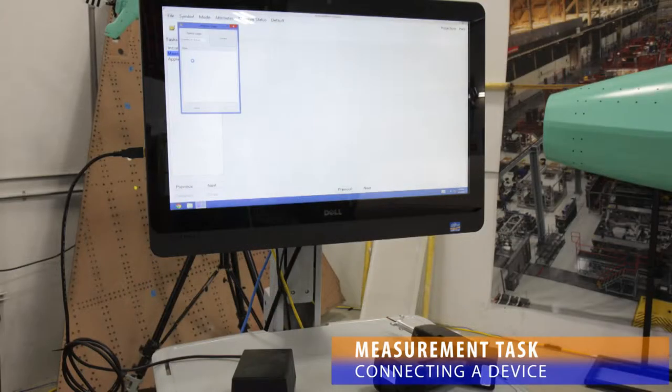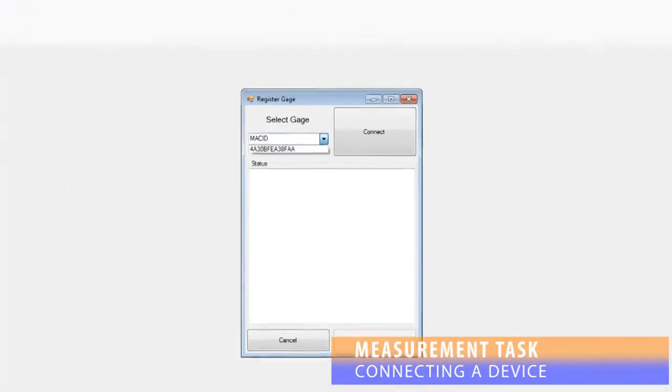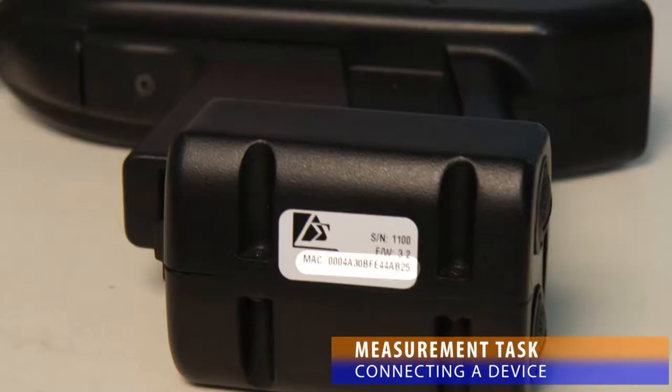Connecting an input device is simple. Connect the receiver to the computer and open AssemblyWorks operator. After loading the appropriate job, the technician steps through the tasks. Once a measurement task is reached, a gauge connection menu will appear. The technician selects the device by MAC ID, which can be referenced on the device, and simply presses OK.